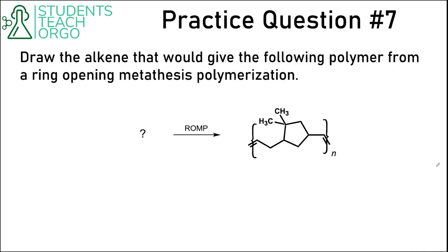We have a practice question where they show us a polymer — a long chain of carbons with a repeating unit in brackets. This is a ring opening metathesis polymerization question where they give us the polymer and we need to find the monomer. Using the blueprint, each double bond at the end must have originally come from a monomer where those carbons were bonded together as a double bond. What happened during the reaction is that this ring — a six-membered ring — had its double bond broken apart and then formed this long chain by coupling to other linear monomers.